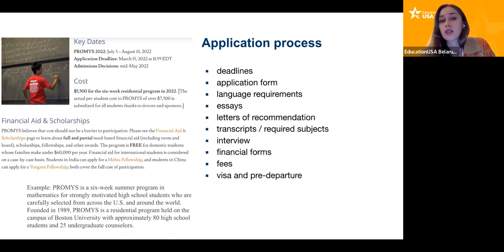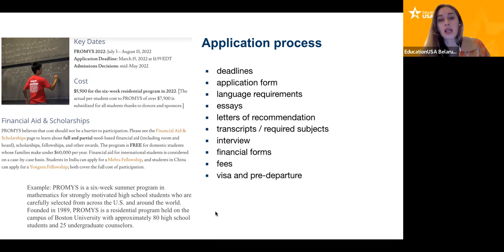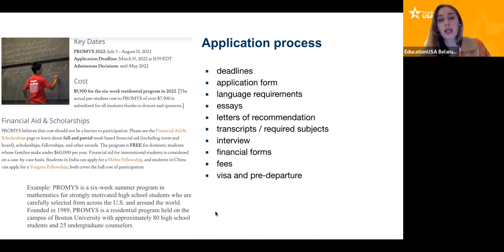An example from MIT Promise, one of the mathematics-focused summer schools — you can see the costs, and that they provide financial aid with prerequisites listed. Check in advance. If you think you are too late for summer programs in 2022, you can start making a list for possible opportunities for summer 2023 with programs like MIT Promise, Yale Global Leaders, or other summer schools. The last slide in this part covers where to search for opportunities. Of course, use Google and different keywords because programs also change — one year a program is available, another year it may not be.